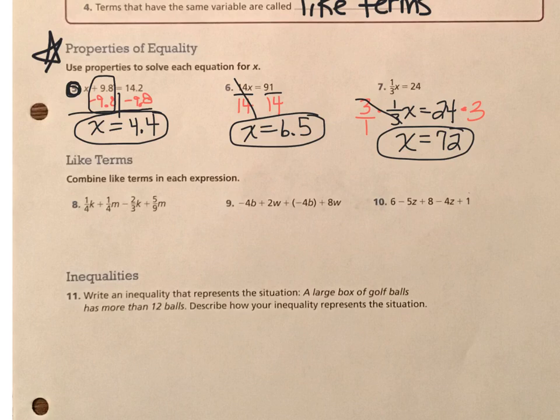So if I take the same amount from both sides of the equation, and here I use a little balance beam to show that I'm doing the same thing on both sides, I'm going to take away that 9.8 from both sides. I keep the equation balanced so that x is equal to whatever 14.2 take away 9.8 is, which in this case is x equals 4.4. So we solve an addition equation by using the inverse operation, which is subtraction.